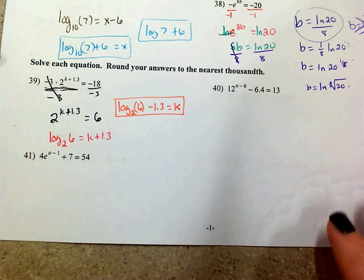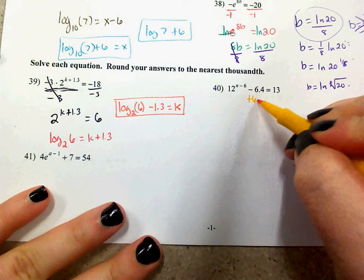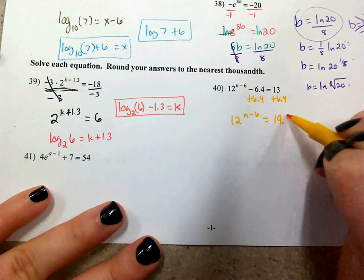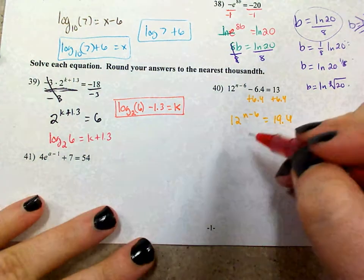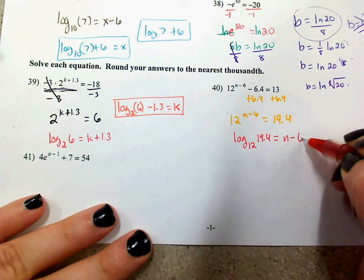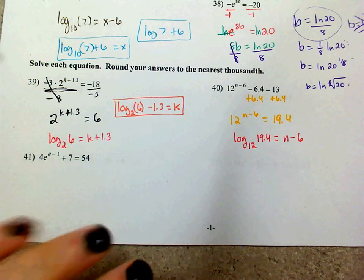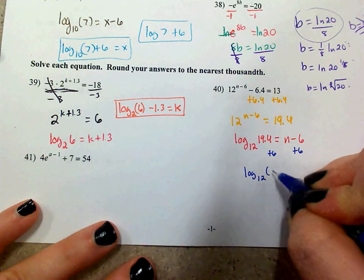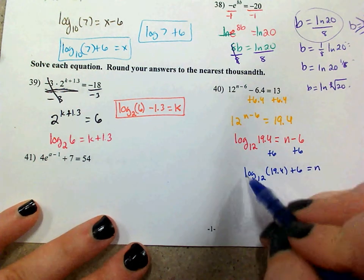On problem 40, I need to get the exponential alone. Right now I'm subtracting 6.4 from it, so I'll add 6.4 to both sides: 12 to the n minus 6 equals 19.4. I've got an exponential equal to a number, so I convert to a log: log base 12 of 19.4 equals n minus 6. Add 6 over: n equals log base 12 of 19.4 plus 6.